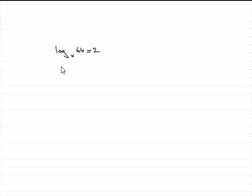So in this question, we've got the log of 64 in base x equals 2 and we've got to find out what x is. So how do we do this?